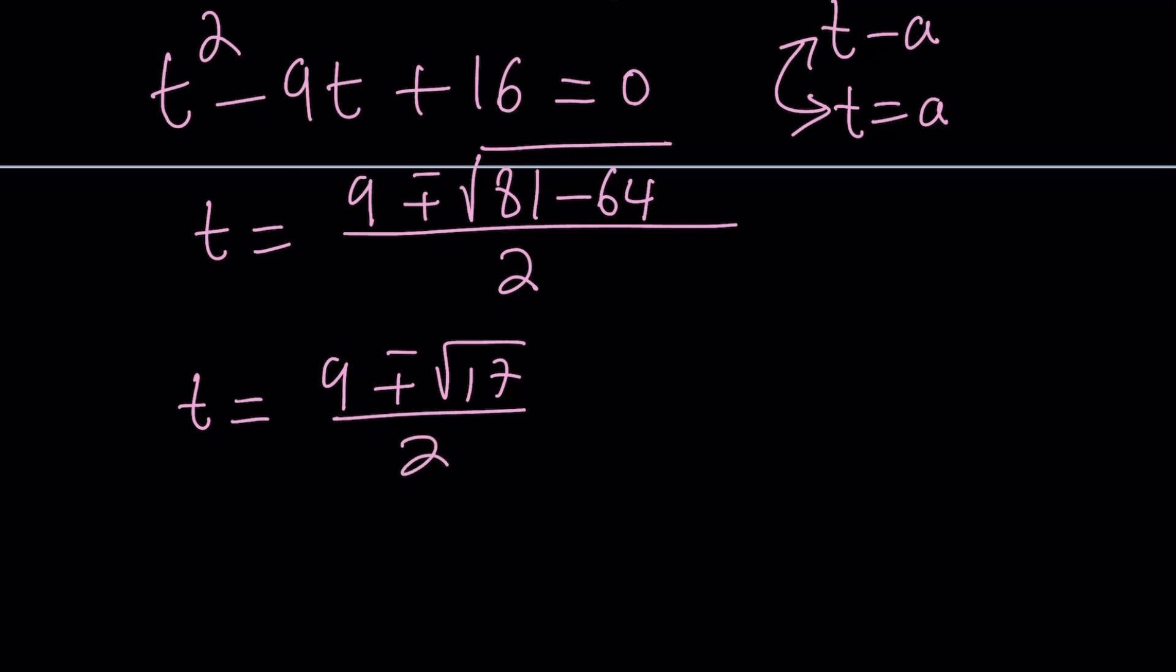So, one thing about the square root of 17, it's definitely less than 9, right? Because it's a little over 4, so it's between 4 and 5. So, both of these solutions are going to be positive. Now, why is that important?